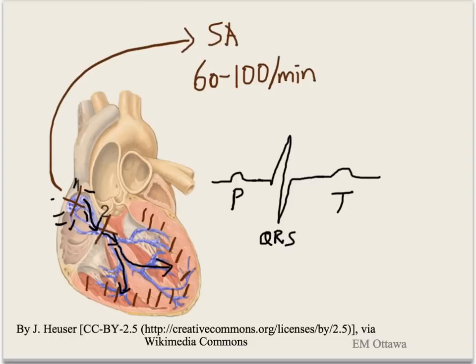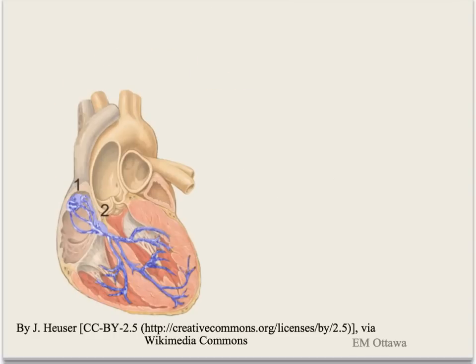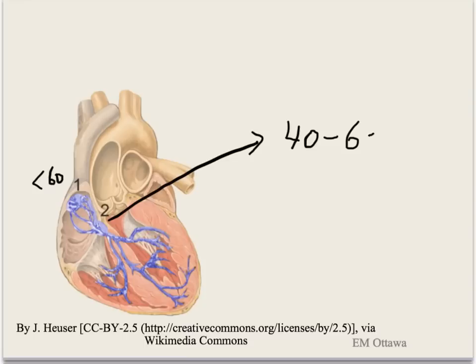That is what happens if the sinus node is in charge of pacemaking. If the SA node falls below 60, then some of the other sites may take over. If the AV node takes over, it will beat at 40 to 60 beats per minute. If the ventricles take over, they will beat at 20 to 40 beats per minute.